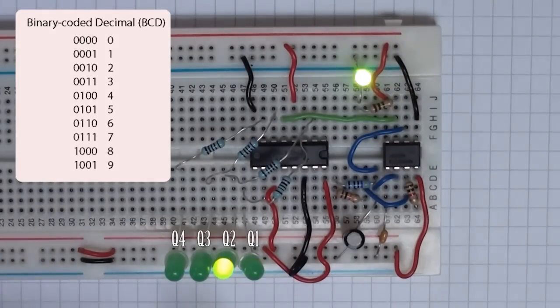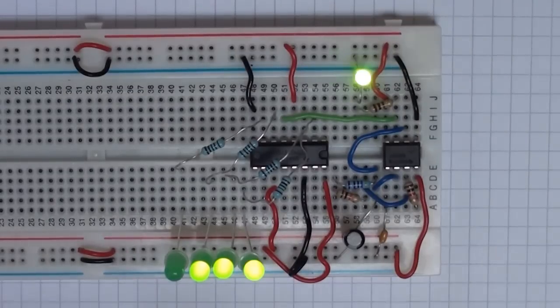So you can see that this first test configuration works perfectly. It's counting from 0 to 9 and back to 0 again. So now we're going to connect this up to our 7-segment display.